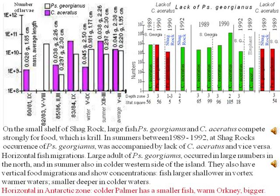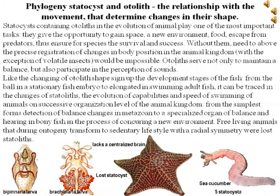Horizontal fish migrations: large adult Georgianus occurred in large numbers to the north and in summer also on the colder western side of the island. They show vertical food migrations and concentration in vortex warmer waters for larger fish and deeper colder waters for smaller fish.